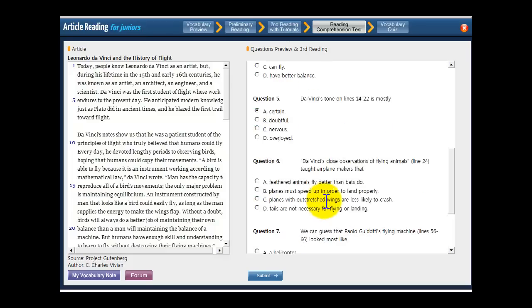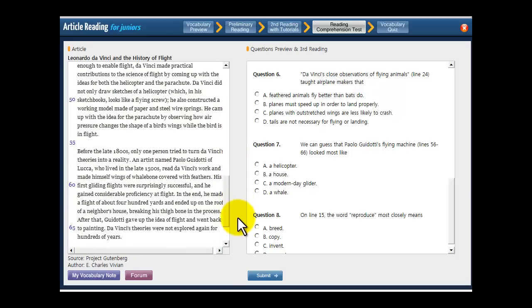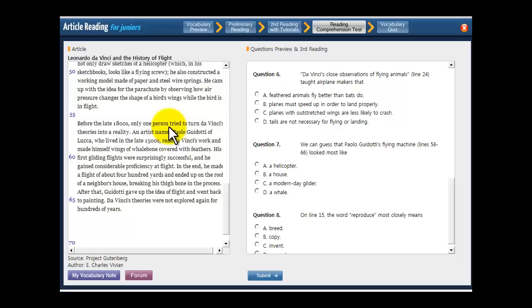Let's look at the last question that we'll talk about today, number seven. We can guess that Paolo Guidotti's flying machine looked most like what? So what did his flying machine look like? And to get that, you've got to read what it says on those lines and try to imagine what the picture looks like in your head. Before the 1800s, only one person tried to turn da Vinci's theories into reality. An artist named Paolo Guidotti of Lucca, who lived in the late 1500s, read da Vinci's work and made himself wings of whalebone covered with feathers. So he has wings and they're covered with feathers. His first gliding flights were surprisingly successful and he gained considerable proficiency at flight. So how is he flying? He has these wings and it says he's gliding, right? So his flying machine kind of looked like something with wings and something that can glide.